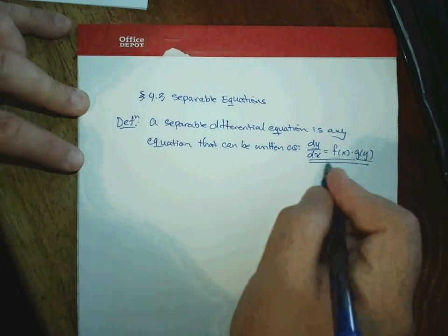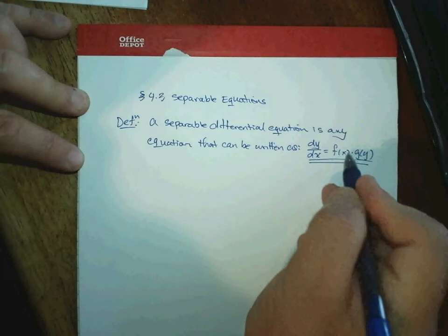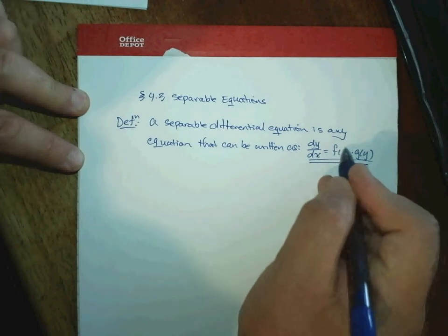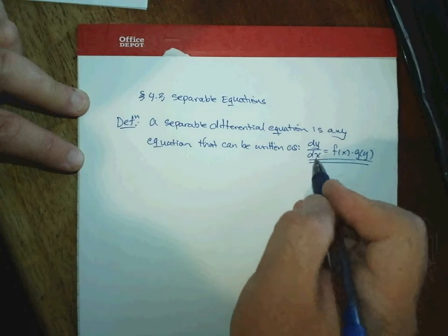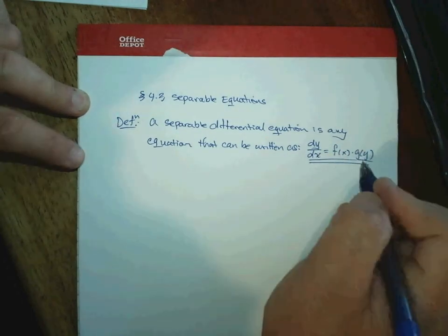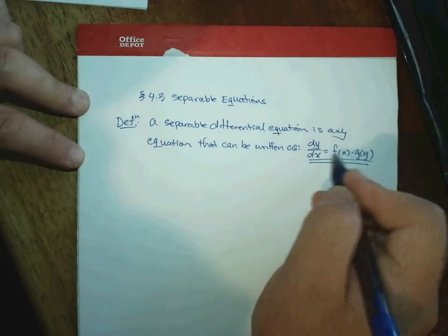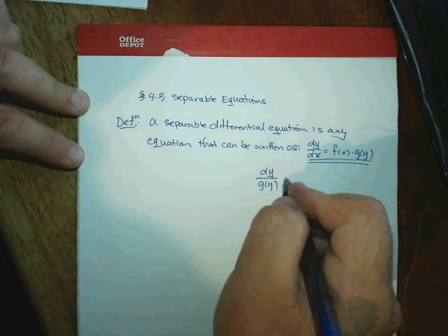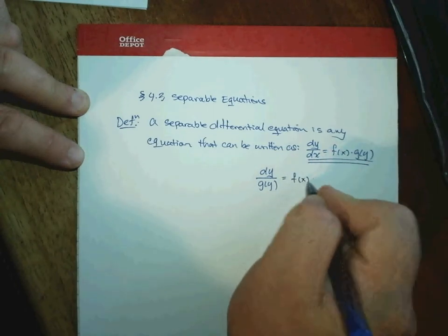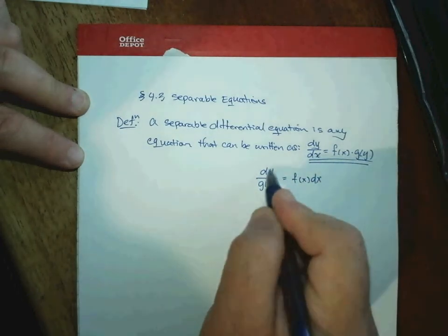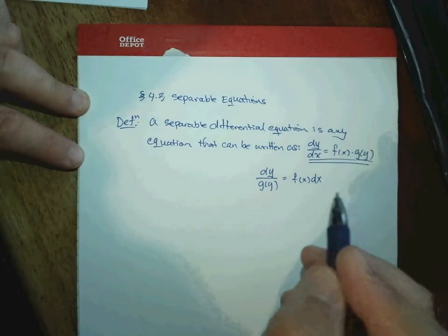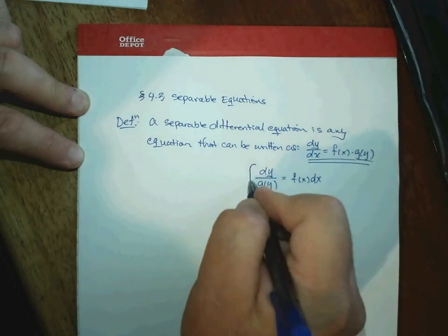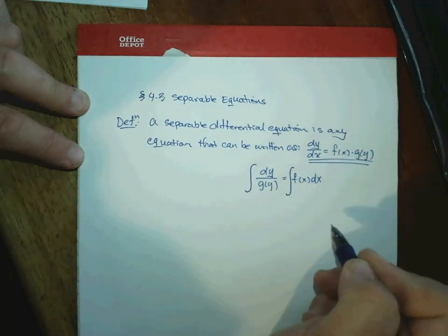The reason we care about this type of differential equation is that the ability to separate the right-hand side into its individual variables allows you to do a simple algebraic operation — moving all of the x terms to one side and all of the y terms to the other. For example, dividing both sides by g(y) and multiplying by dx puts all y's on the left and all x's on the right, and then we can simply integrate both sides.